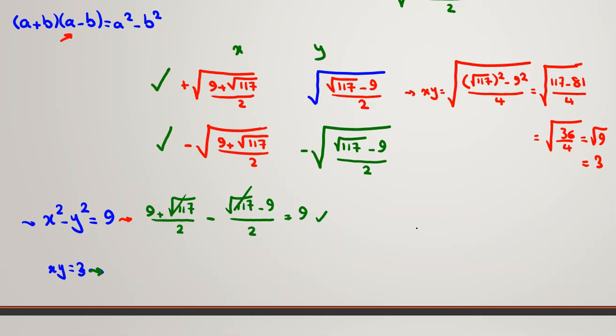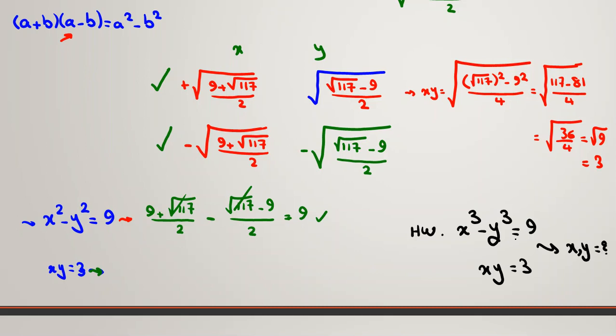As homework, try solving: x cubed minus y cubed equals 9 and xy equals 3. Find x and y, and comment your answers below. Please don't forget to subscribe, turn on notifications for future videos, and like the video. Thank you for watching, bye!